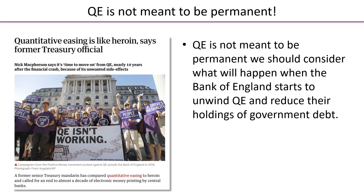However, quantitative easing is not meant to be permanent. A treasury official likened quantitative easing to heroin — it's highly addictive, it's distortive, and has many unwanted side effects in the economy. So if it's not meant to be permanent, we should consider what happens when the Bank of England starts to unwind quantitative easing and reduce their holdings of those IOUs, that government debt.